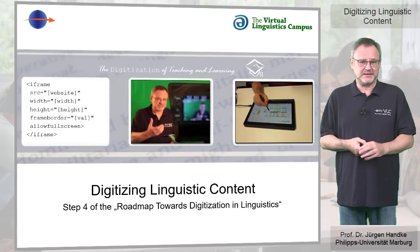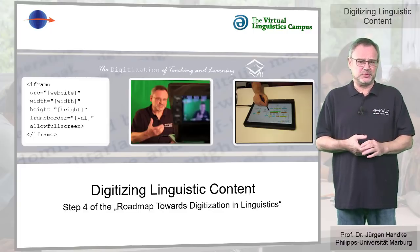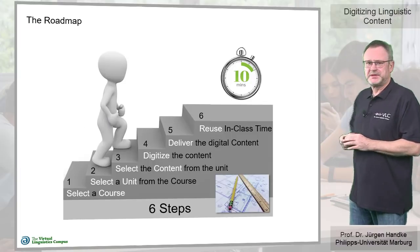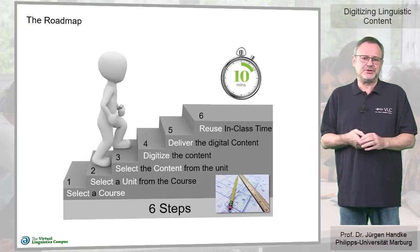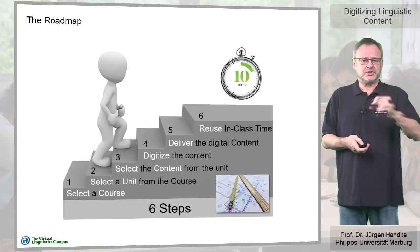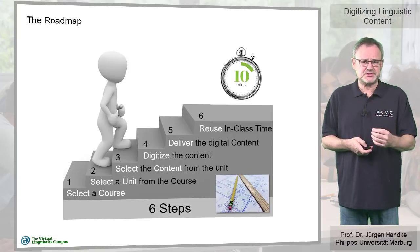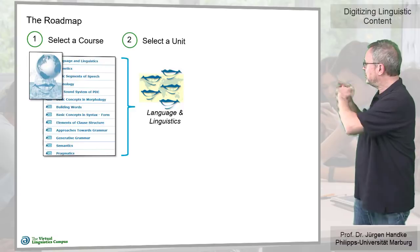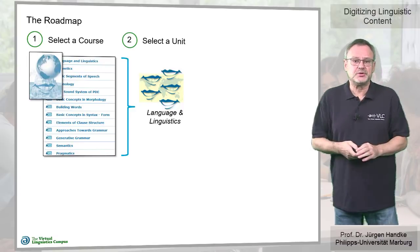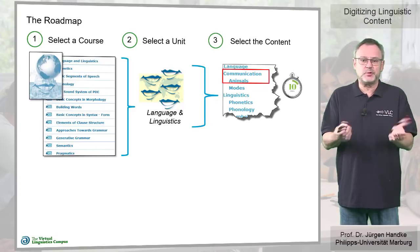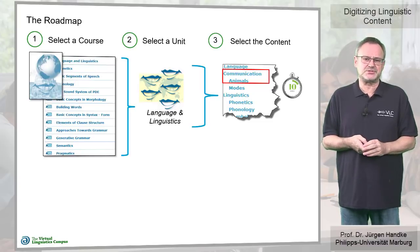Hello and welcome back. In my roadmap video I introduced six steps that help you to move from traditional to digital teaching and learning concepts. According to these steps you first select the course, then a learning unit and eventually a content section from that unit that requires roughly 10 minutes in class time.